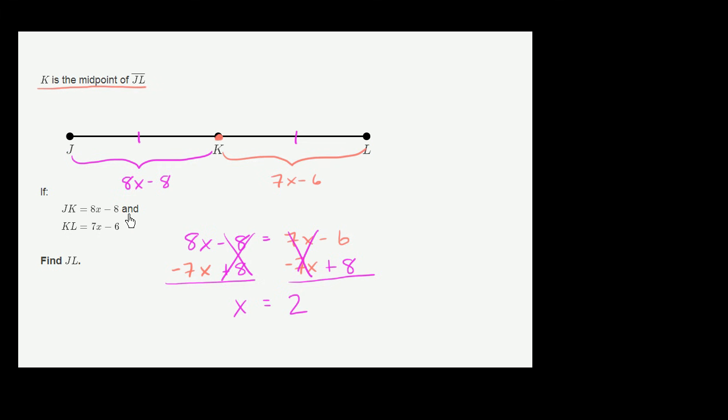They didn't say solve for x, they said find JL. So JL is just going to be the sum of JK and KL. Or since K is the midpoint, it would just be double JK or double KL.